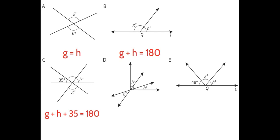For situation D, we use a combination of vertical angles and complementary angles. These three angles add up to 90 degrees because they form a right angle — they are complementary. Angle G and another angle are vertical to each other, so they are equal. Therefore we can conclude that 2H plus G equals 90 degrees, since we have H plus H giving 2H, and G added to that gives 90.